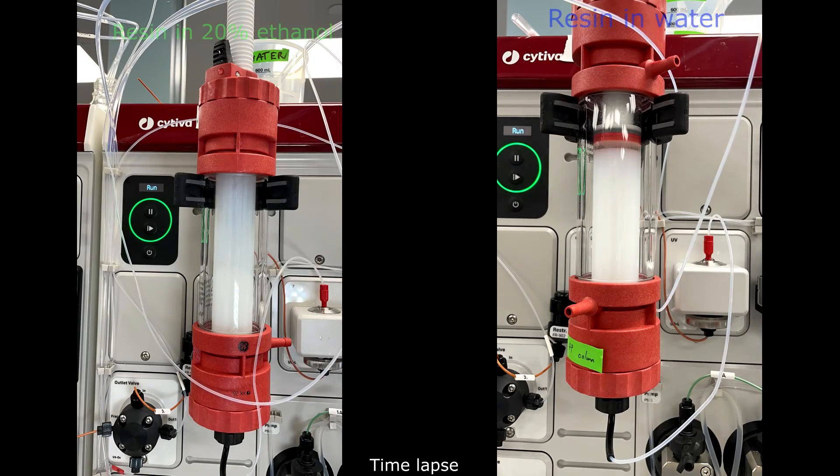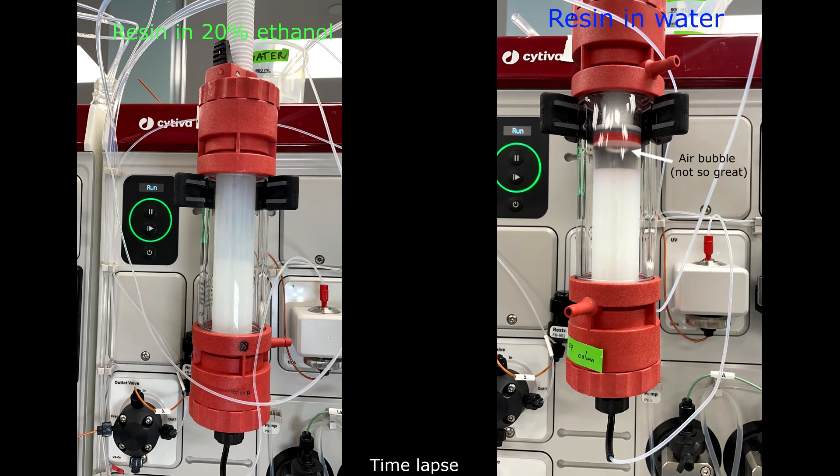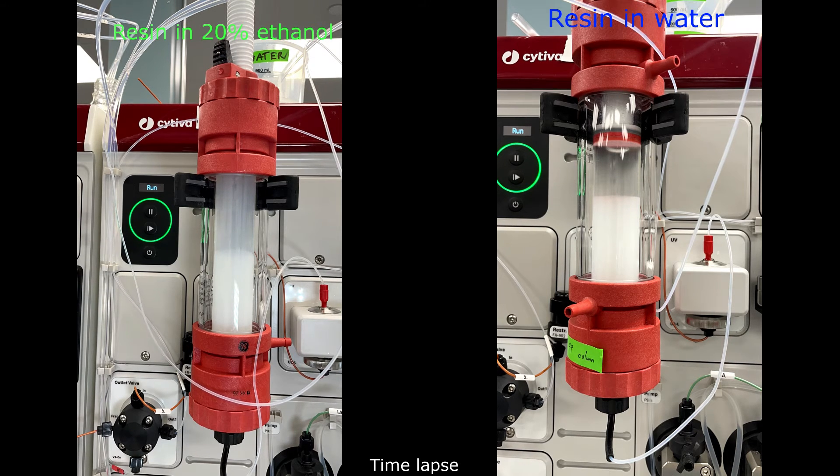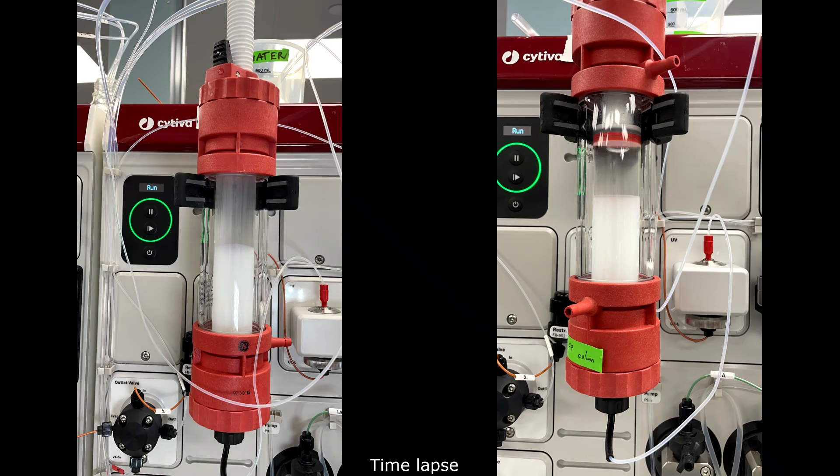So I did this pack several times for this video. What I want you to see is that this is a time-lapse video for packing the column when the resin has a bunch of ethanol in it, that's on the left, and when it's completely equilibrated in water on the right. You'll notice that the resin settles almost immediately if it's completely in water.